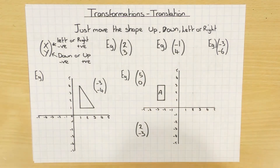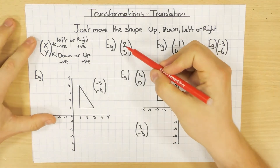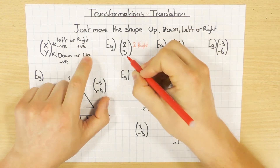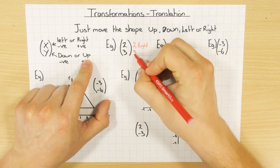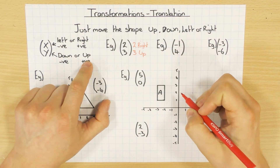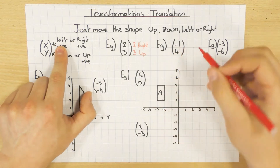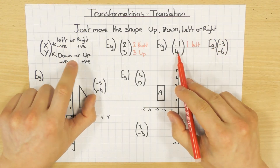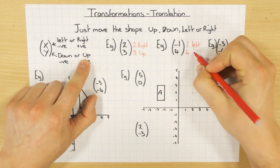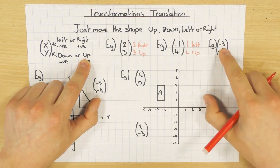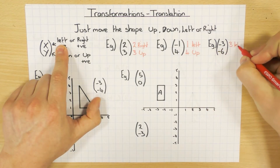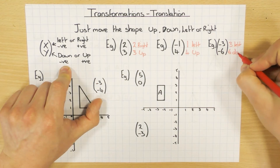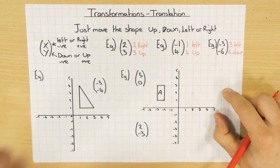Here are a couple of examples of column vectors. The first one: the top number is positive, so I go 2 to the right, and the bottom number is positive, which means I go 3 up. Next one: minus 1 on top, so it's negative, which means I go 1 to the left, and positive 4 on the bottom, so I go 4 up. Last one: minus 3 on top, so I go 3 to the left, and the bottom is also negative, minus 6, so I go 6 down.